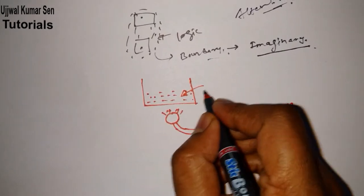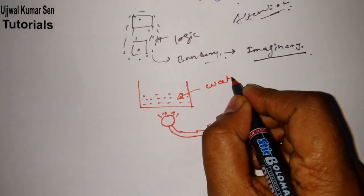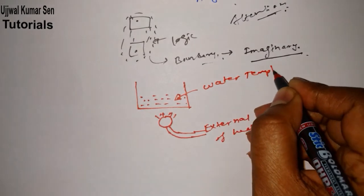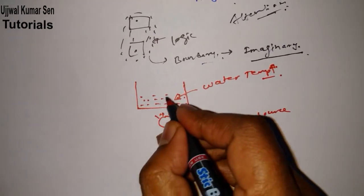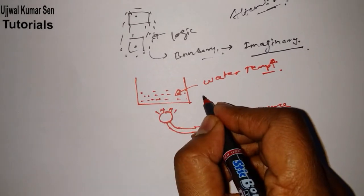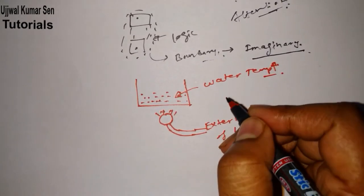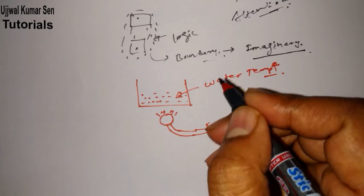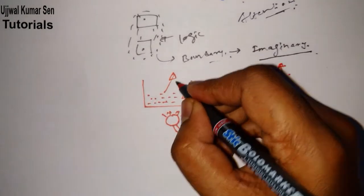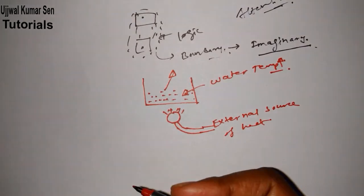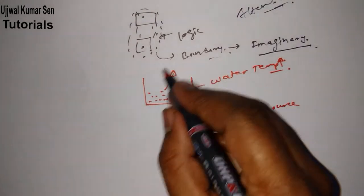If temperature increases, what will happen? Slowly, slowly, beyond 100 degrees centigrade, water will start evaporating. That means water will go outside because of the lightness of the vapor.